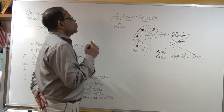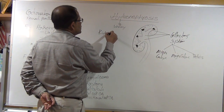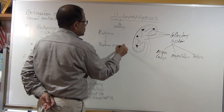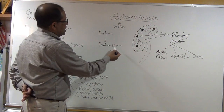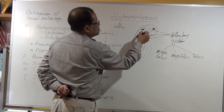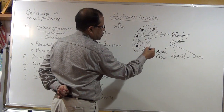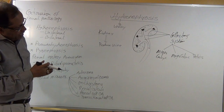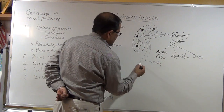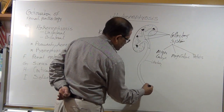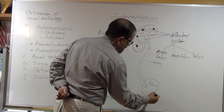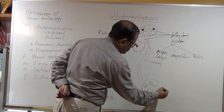The kidney produces urine, which is a watery substance. Urine starts from the medullary pyramid, travels down into the ureter, from the ureter into the bladder, and from the bladder it passes through the urethra.